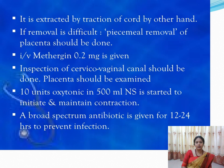After manual removal, give methergine 0.2 mg and inspect the cervical and vaginal canal for bleeding or any injury or tear. Examine the delivered placenta for completeness. Start 10 units of oxytocin in 500 mL of normal saline to initiate uterine contractions. Give prophylactic antibiotics for the next 12 to 24 hours to prevent infection.